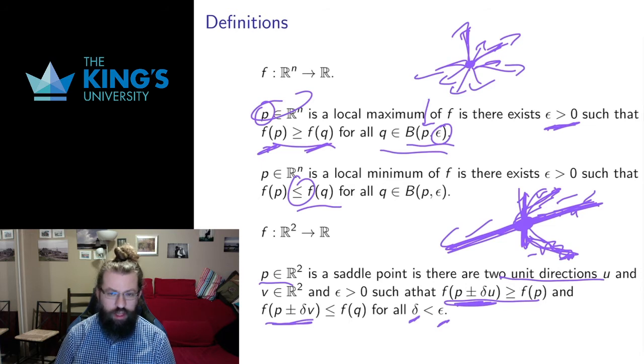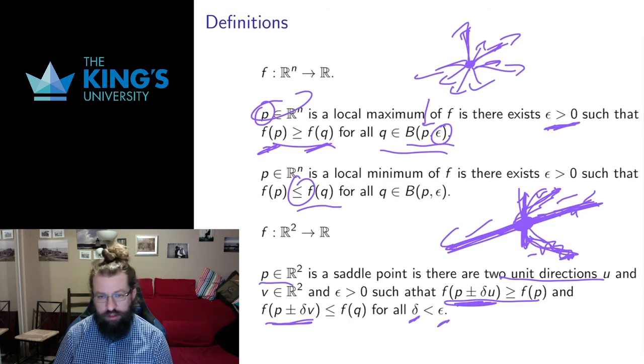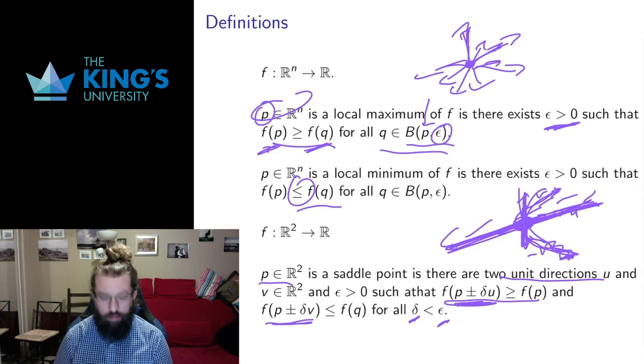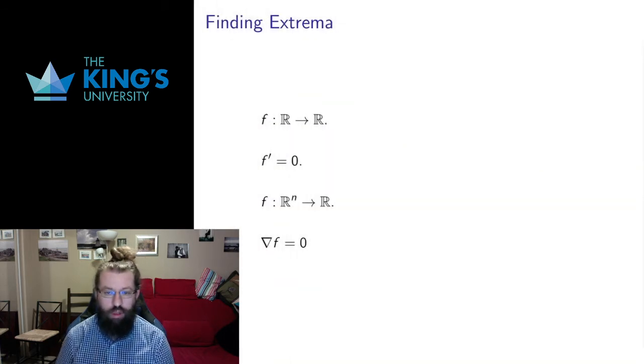But it's a good indication that extrema can be quite different in multivariable situations. It's not just the situation of a maximum and a minimum. So how do we find them?